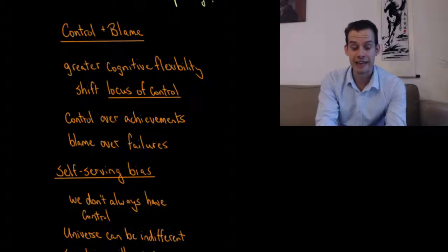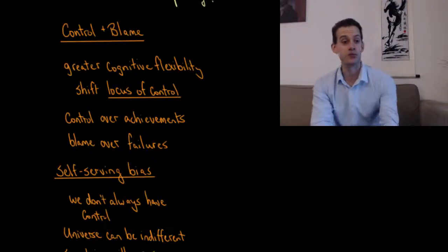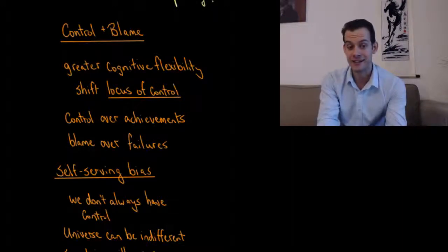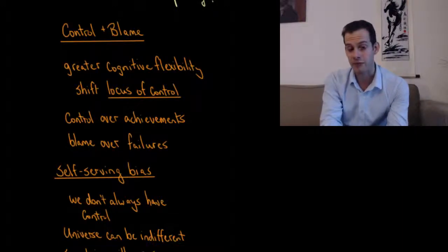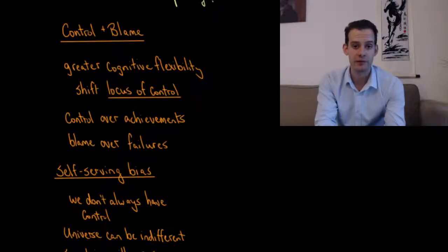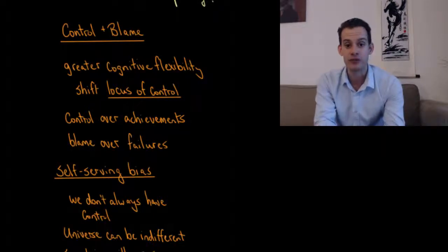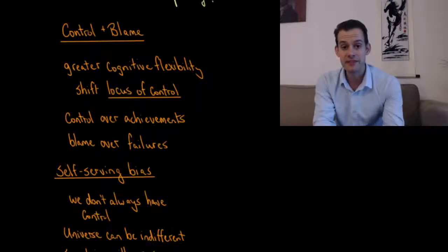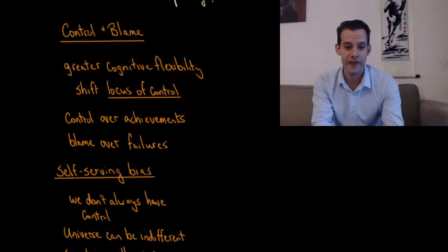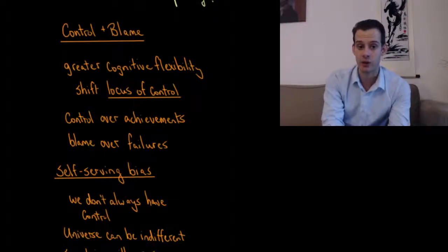Now it might be useful to have an internal locus of control when it comes to our achievements. When we've done well, we might like to think that I'm the reason that I've achieved this. When we fail, however, it might be better to blame things outside of ourselves. Now it might not always be better, and we need to take responsibility for certain outcomes, but sometimes things really are outside of our control. And it might be useful to recognize when that happens, to shift to an external locus of control.